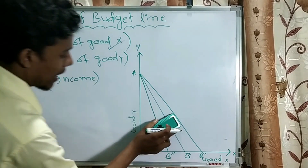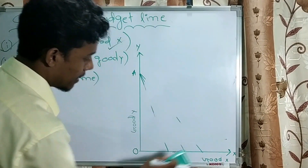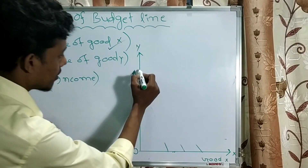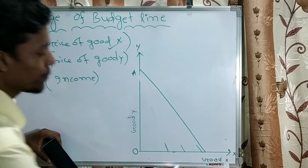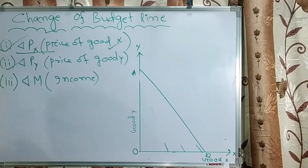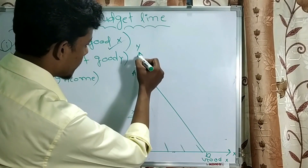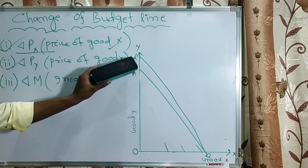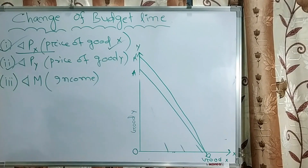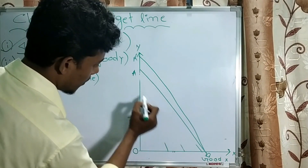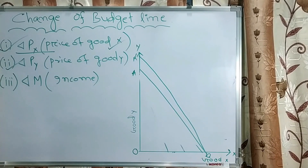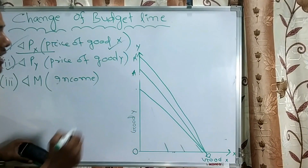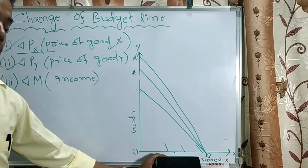In the second case, if the price of good Y changes — if the price of good Y falls, the consumer can purchase more of good Y with his limited income. If the price of good Y rises, the consumer can purchase less of good Y, while the price of good X remains the same.